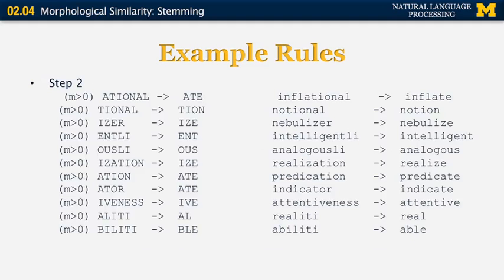Some of the rules in step 2: '-ational' becomes '-ate', so 'inflational' turns into 'inflate'. If '-ational' doesn't match but '-tional' matches, that gets converted to '-tion'. The order of the rules really matters — if we had '-tional' before '-ational', the second rule would never apply. Further rules include: '-iveness' gets converted to '-ive', so 'forgiveness' turns into 'forgive' and 'attentiveness' into 'attentive'.